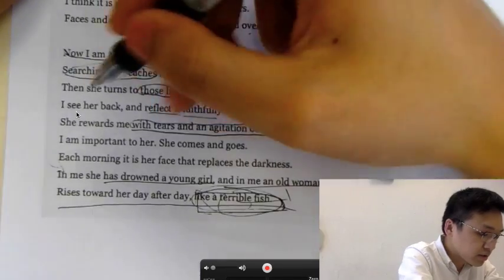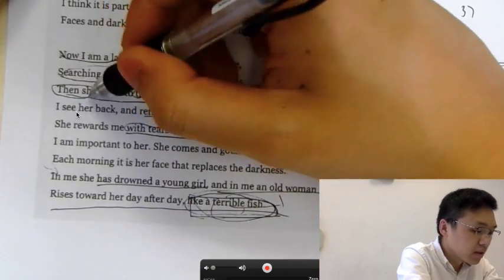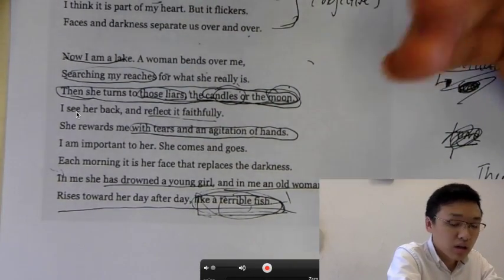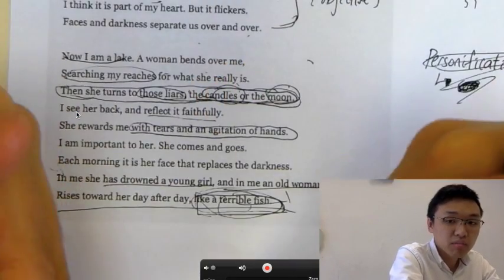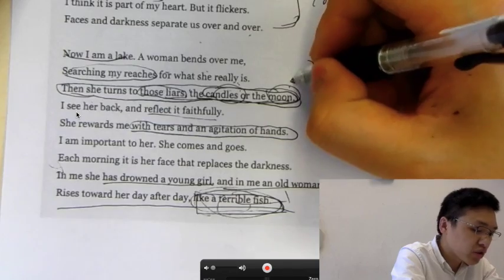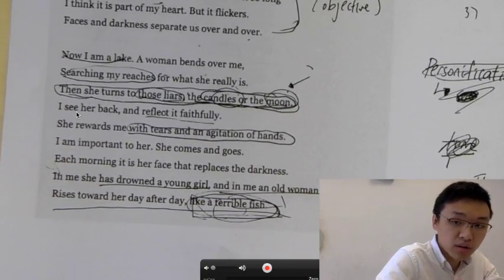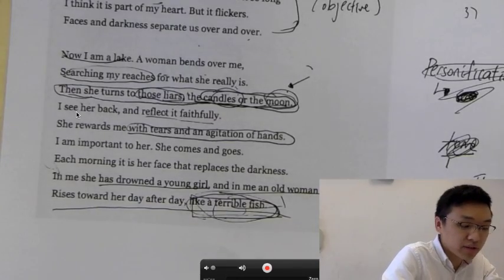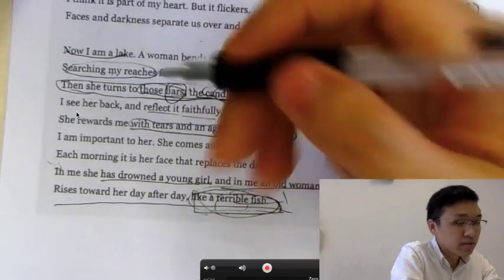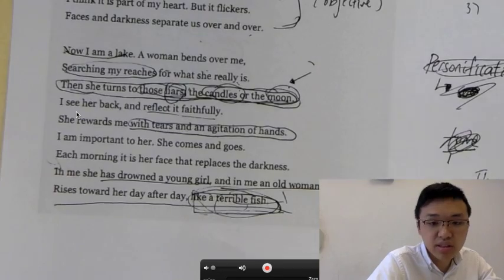So another metaphor that I used is here. Searching my reaches for what she really is, then she turns to those liars, the candles or the moon. Liars, candles or the moons. Candles and moons, basically, as I mentioned, improve the appearance of a woman. Anybody who stands under a candle or a moon will look better than she actually is. So this metaphor shows how Sylvia Plath is searching for spiritual comfort. She's trying to search for ways to conceal her aging process. She's trying to search for ways to enhance her appearance. But those are lies. And she knows that these things like candles and moons that enhance her appearance are actually lies. So even though she can conceal the aging process, she can't hide it.